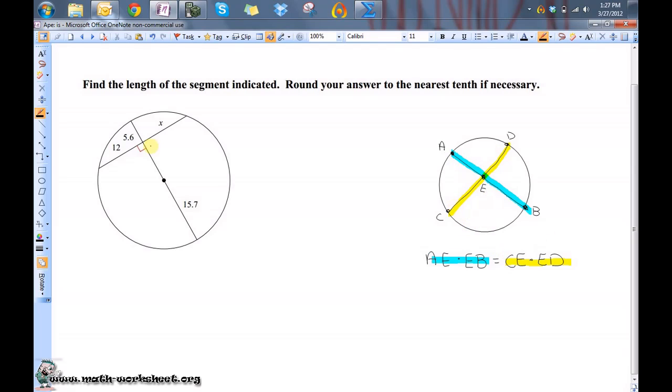So to be able to do that, we're first going to need to find this value here from this point where the two chords intersect up to the radius. I know that since the radius is 15.7, this entire length here is also 15.7. So I know that 5.6 plus y will equal 15.7, so that means y must equal 10.1.